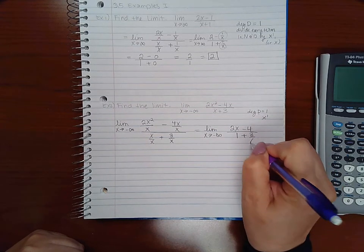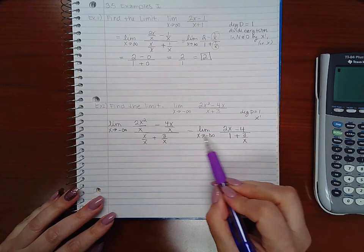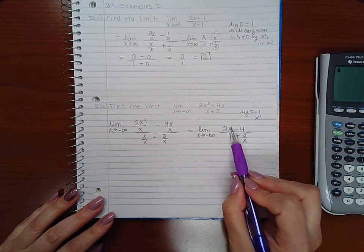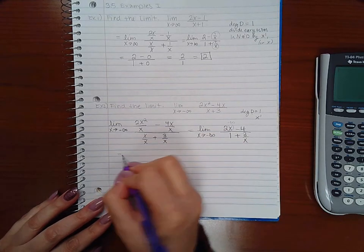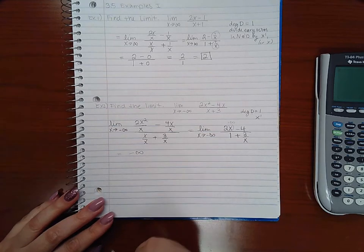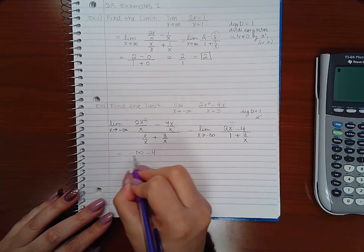Now if x is going to negative infinity, this is going to negative infinity. And if you multiply it by 2, you still get negative infinity. But the limit of a constant is just that same constant.